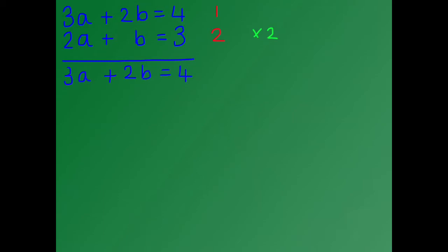I'm going to rewrite equation number 2, but everything in this equation is going to be multiplied by 2. So we've got 2a times 2 gives us 4a. We've got b times 2, and this gives us 2b. And we've got 3 times 2, which gives us 6. Again, I'm going to label the equations: equation number 1 here, and equation number 2 here, which has been multiplied by 2.